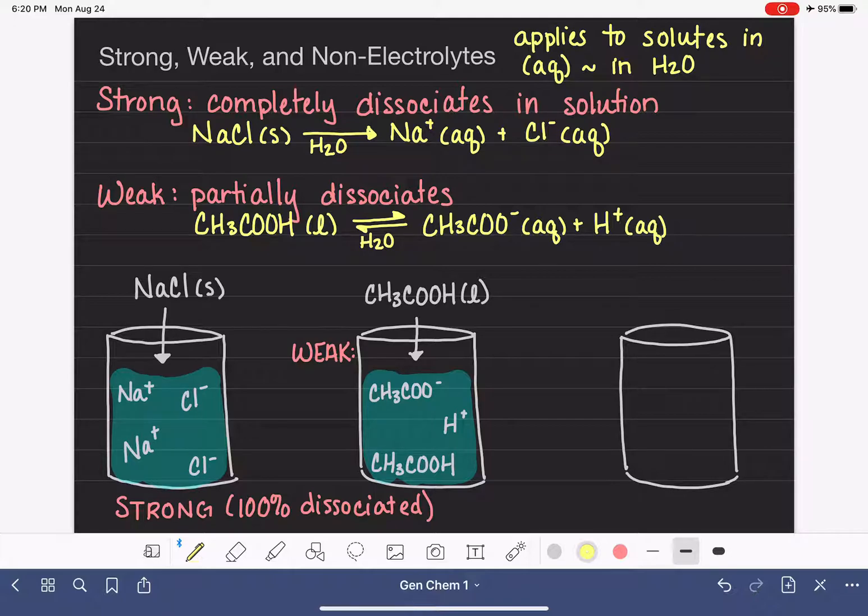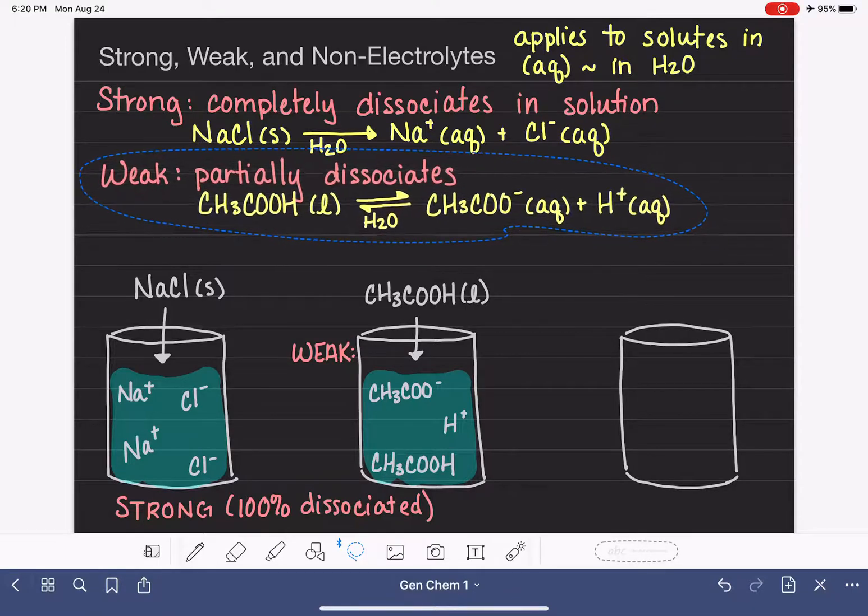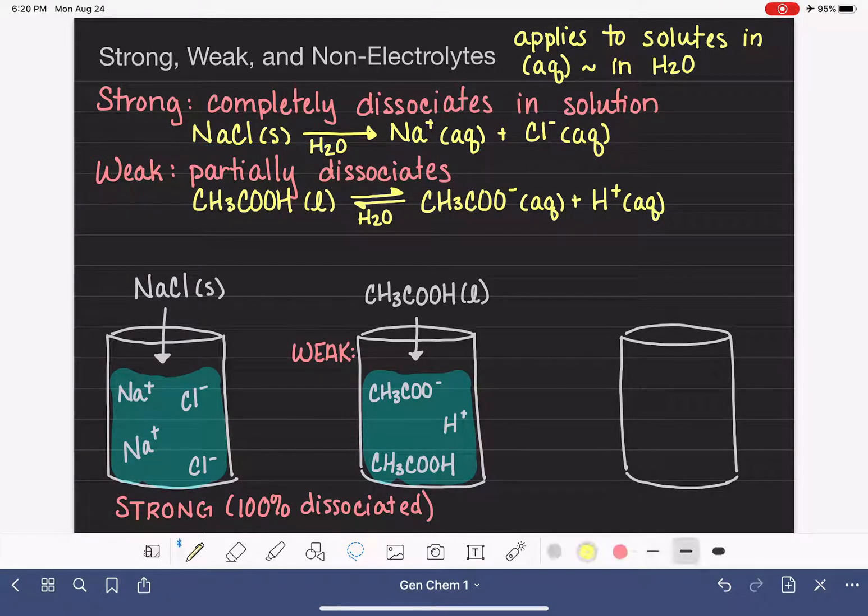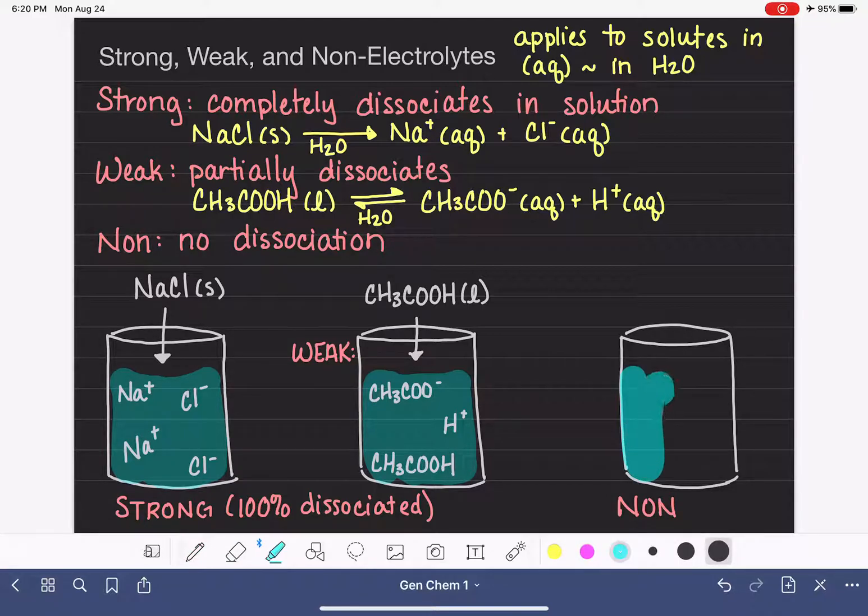Now, in the last situation, we have a non-electrolyte. And a non-electrolyte is one that does not dissociate at all. So this undergoes no dissociation. It does not mean that it doesn't dissolve. It just doesn't dissociate. So over here, we're going to do one more beaker. This is going to be a beaker of a non-electrolyte. We'll put some water in it.